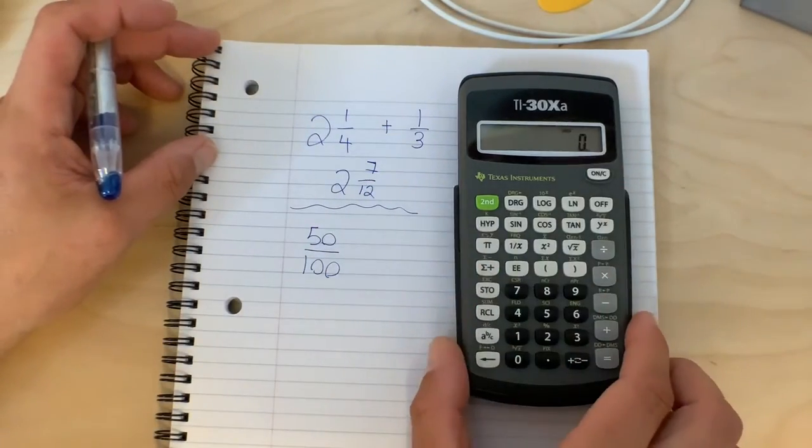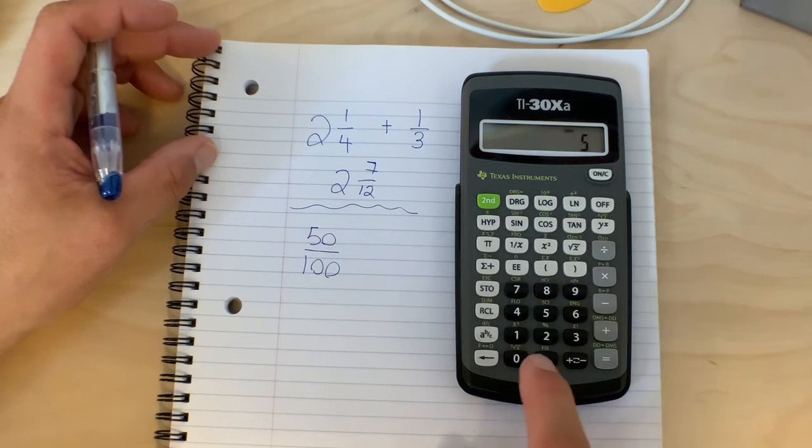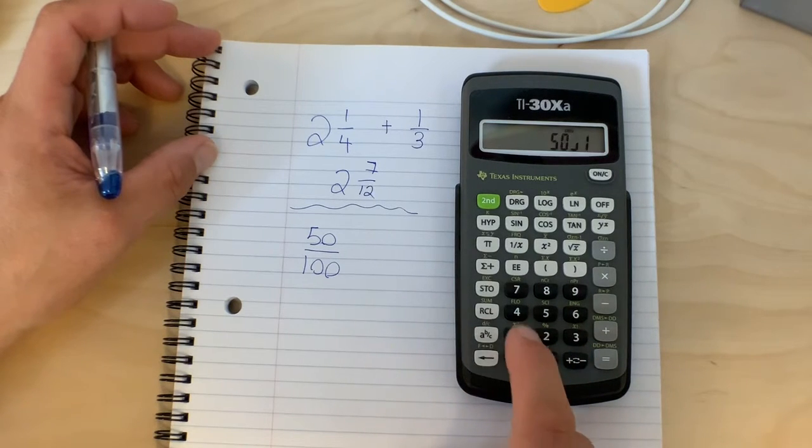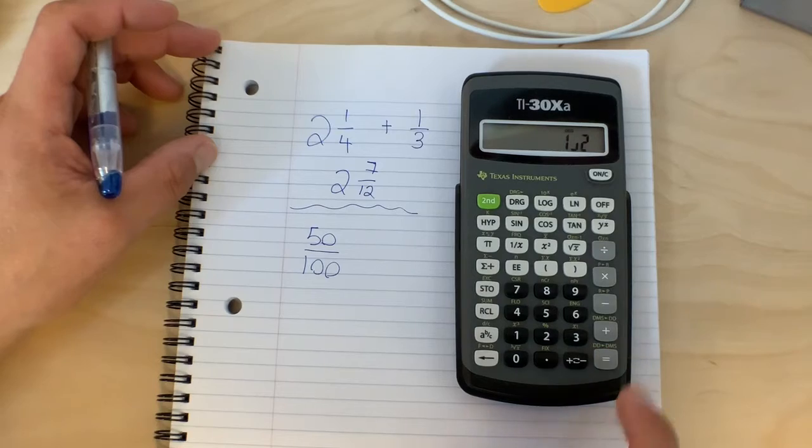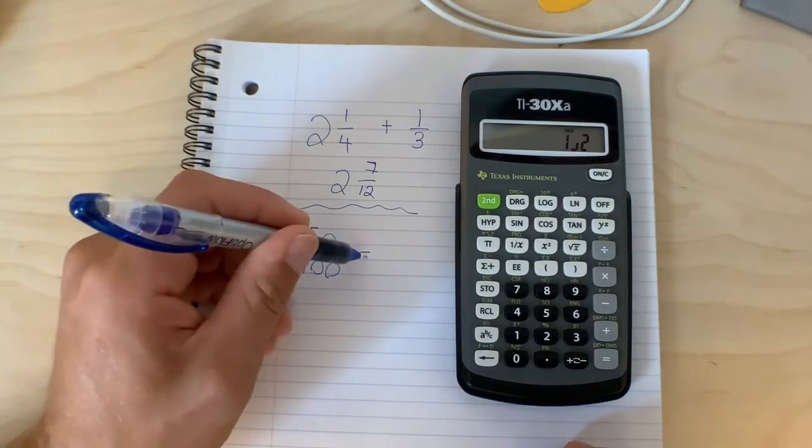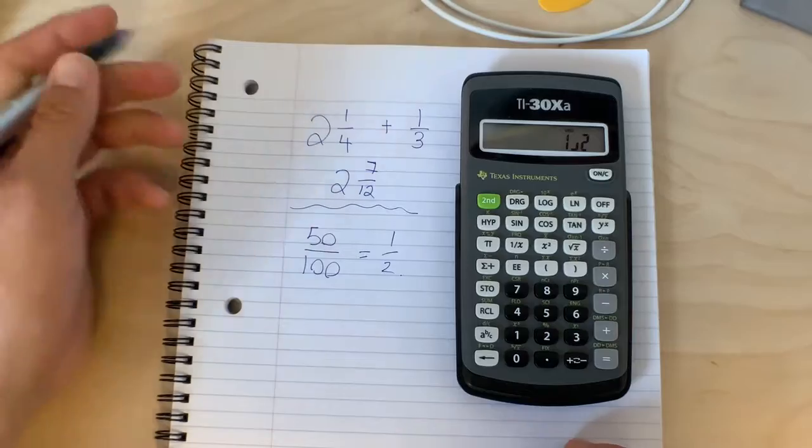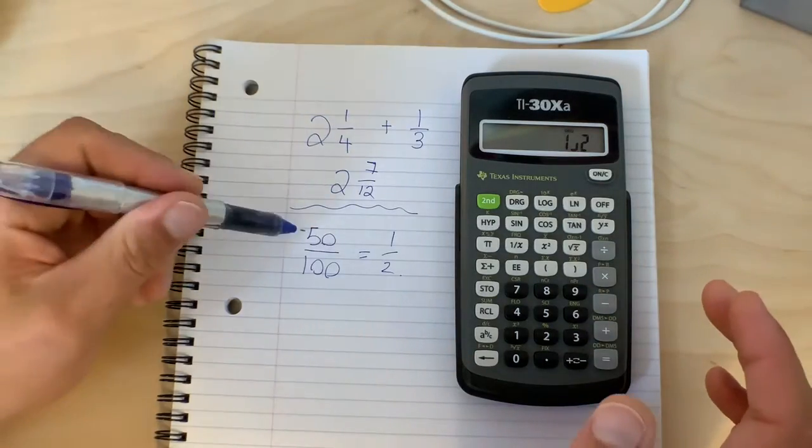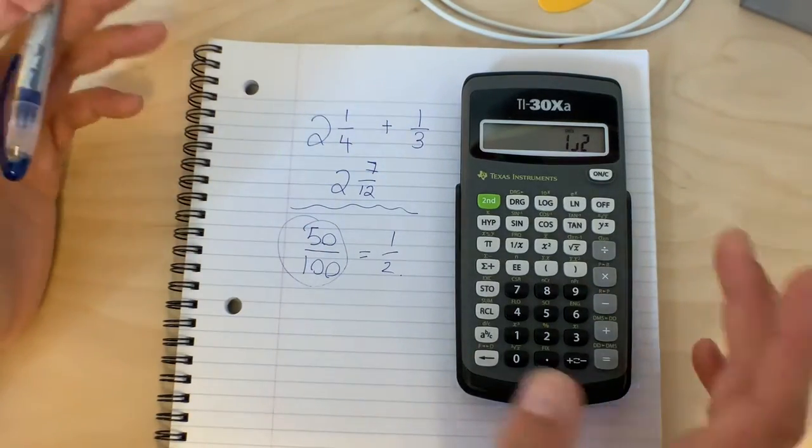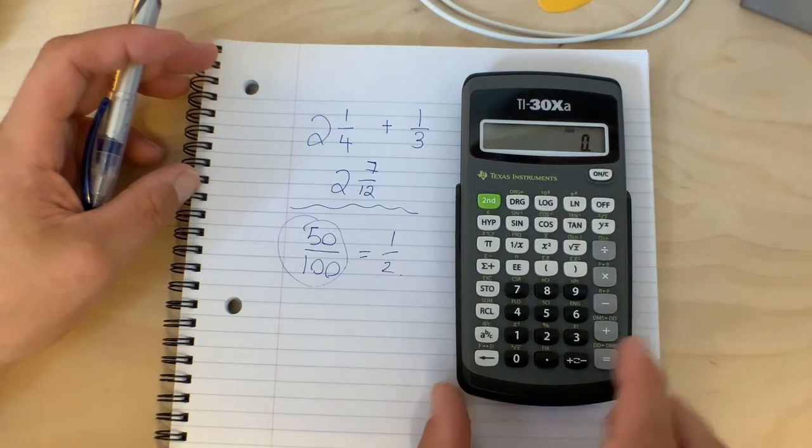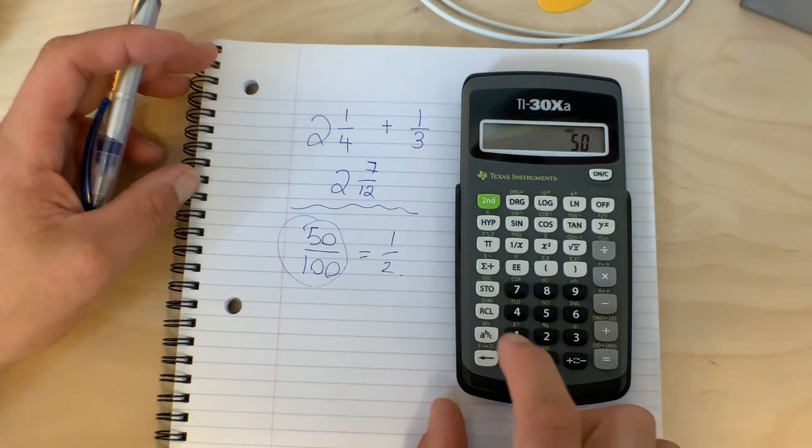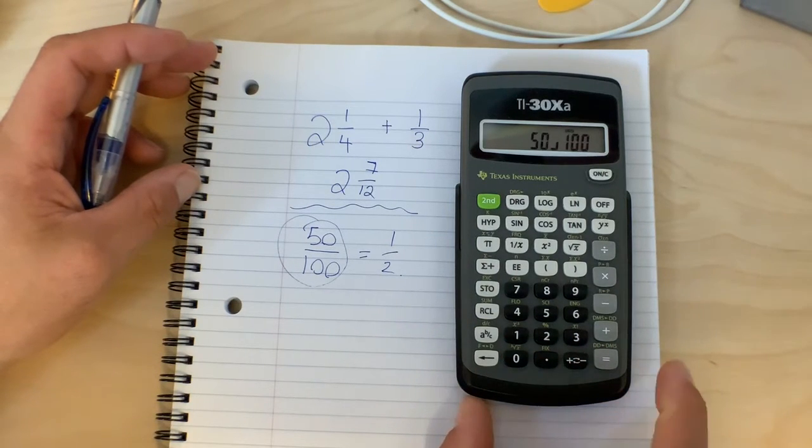There's an easier way. You can just put them into the calculator: 50, fraction button, 100, and hit equals. So anytime you have a big fraction like that, you can always reduce it just by putting it into the calculator: 50, fraction button, 100, and then just hit equals.